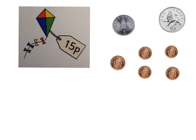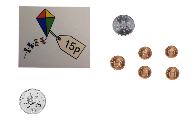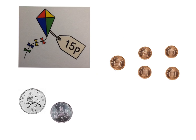If we wanted to buy something that costs 15 pence, again we don't have a 15 pence coin, so we can start with the 10 pence again. And we do have a 5 pence coin, so we could use a 10 pence and a 5 pence coin, because 10 add 5 makes 15.